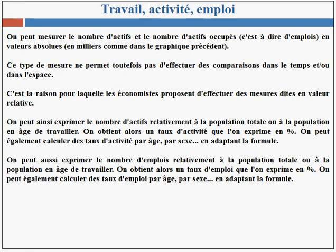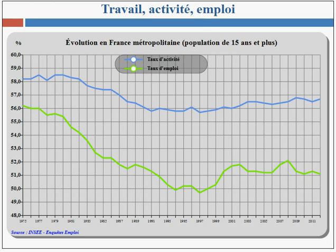On peut également calculer des taux d'emploi par âge, par sexe, en adaptant la formule. Ce nouveau graphique présente cette fois-ci l'évolution des taux d'activité et des taux d'emploi en pourcentage, et renvoie une image bien différente de celle du graphique exprimé en valeur absolue. Ainsi, il semblerait que les taux d'activité en France se soient très nettement réduits à partir du début des années 80 jusqu'au début des années 90, pour se stabiliser puis remonter ensuite légèrement depuis à peu près 2001. Pour le taux d'emploi, la chute est beaucoup plus forte et se prolonge jusqu'à la fin des années 1990, environ 1997, pour remonter ensuite de façon également relativement sensible jusqu'en 2012.